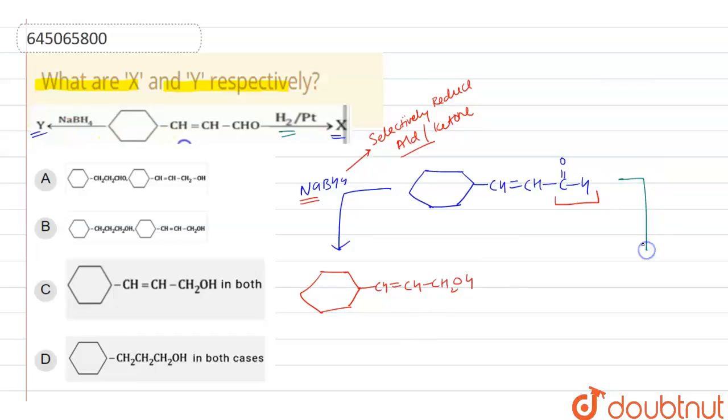So let's talk about the second reagent. Second reagent is H2/Pd. So basically it will reduce both of them. Aldehyde will be reduced by it and as well as alkyne also will be reduced by it.